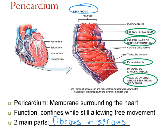The fibrous pericardium is the outer, stronger layer — made of dense, irregular connective tissue. The function of this fibrous layer is literally to prevent overstretching of the heart. So it confines the heart.